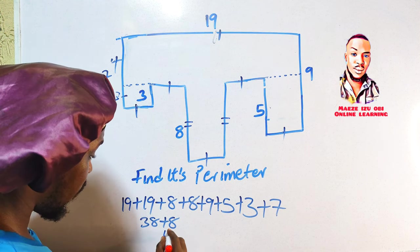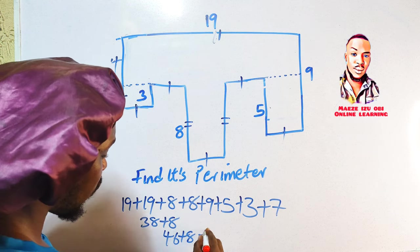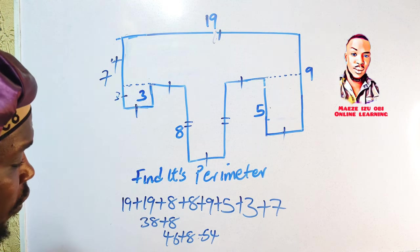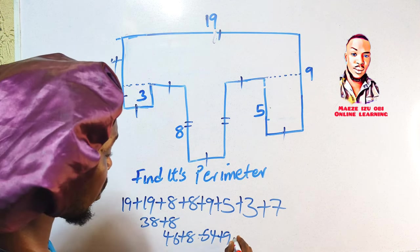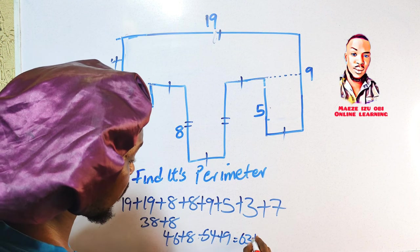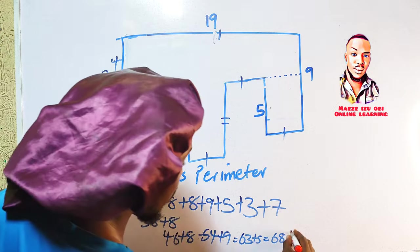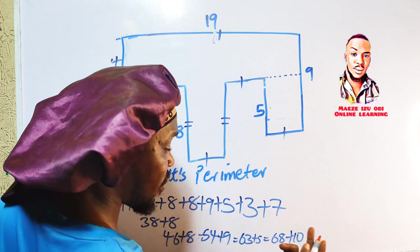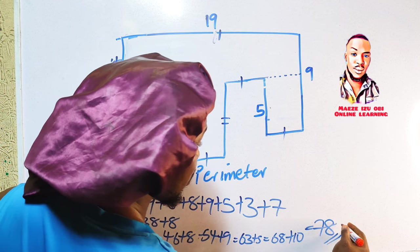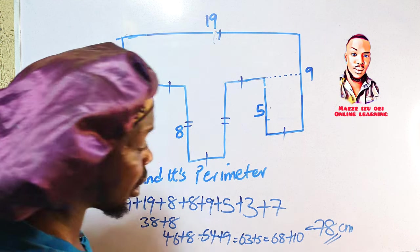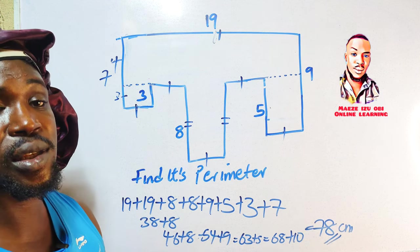46 plus 8 gives us 54. 54 plus 9 gives us 63. 63 plus 5 gives us 68. 68 plus 10, because 3 and 7 is 10, is going to give us 78. 78 centimeters. So our answer to this beautiful question is 78 centimeters.